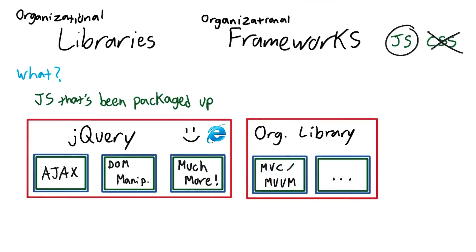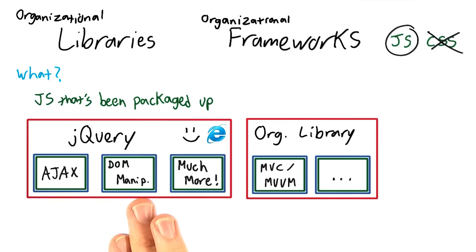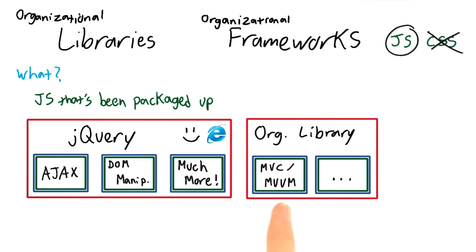Let's talk specifically about organizational libraries. Organizational libraries are libraries just like jQuery, but instead of focusing on Ajax and DOM manipulation, they focus on application organization — MVC or MVVM, what we know as Model View Octopus — and often some other things as well.